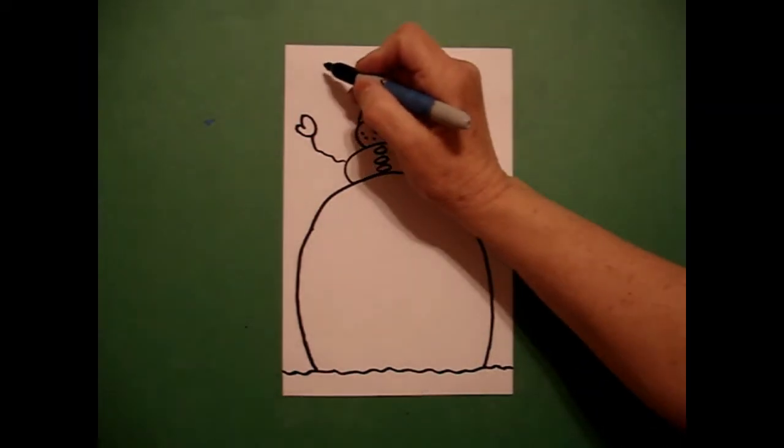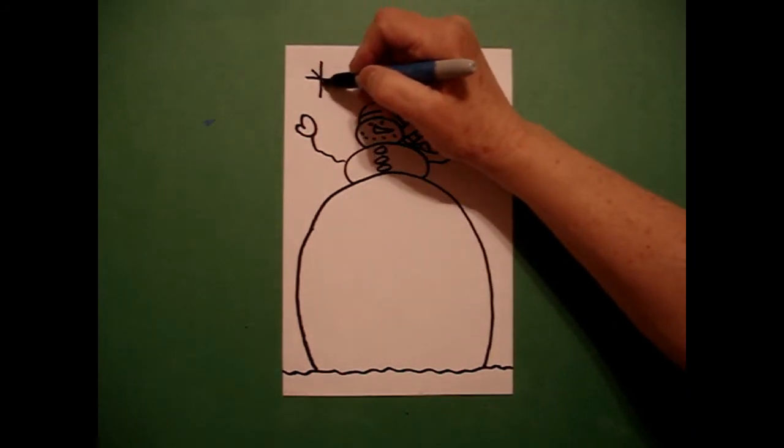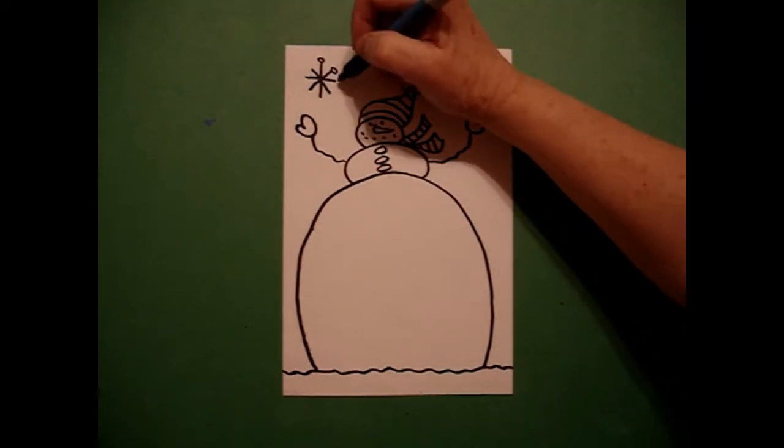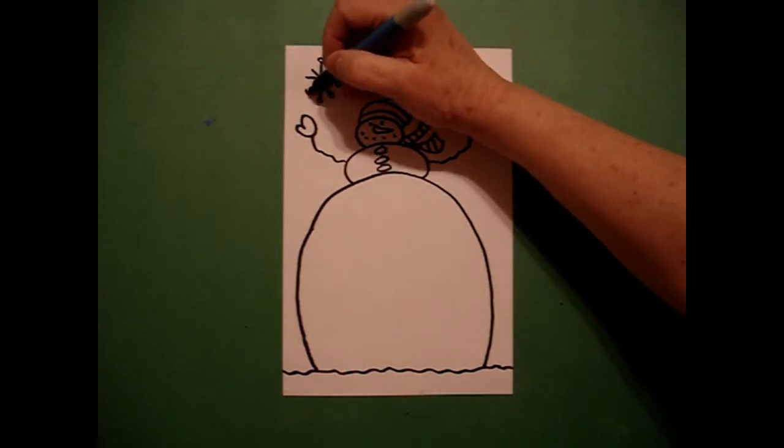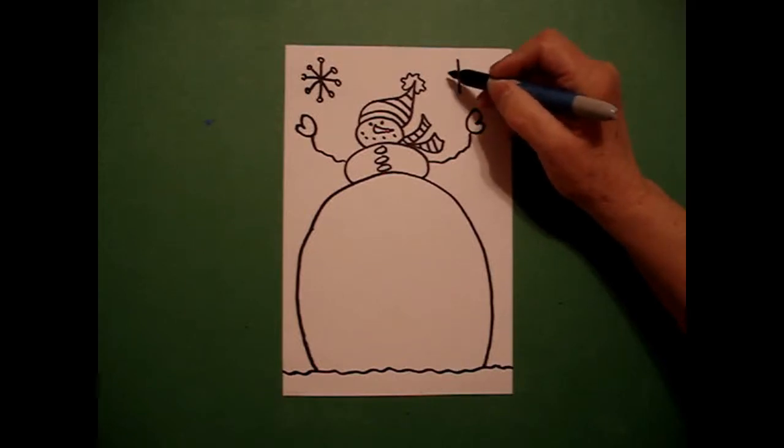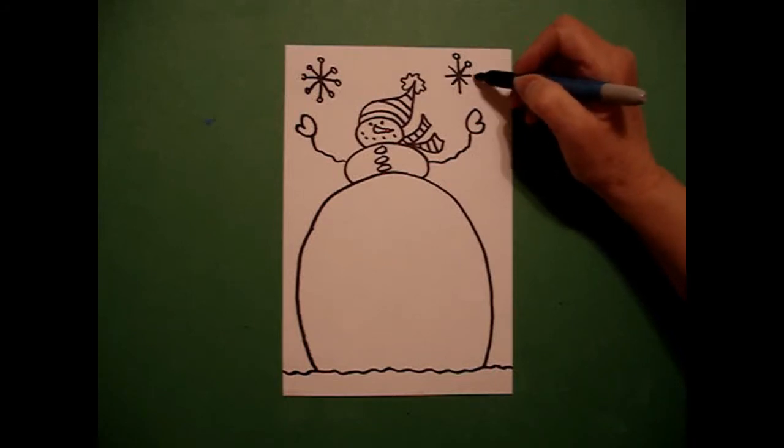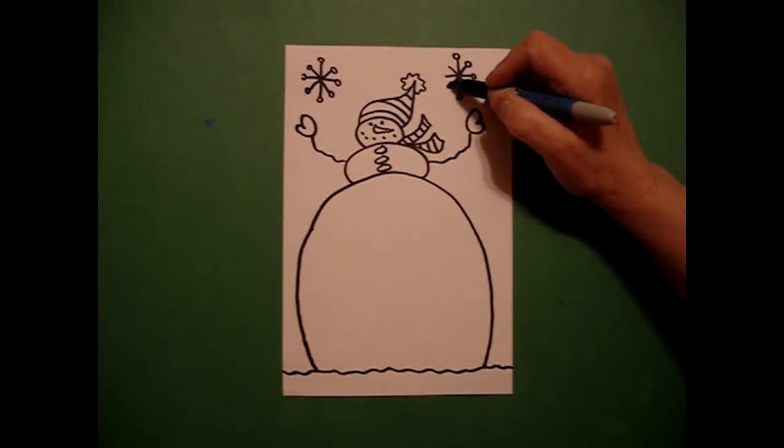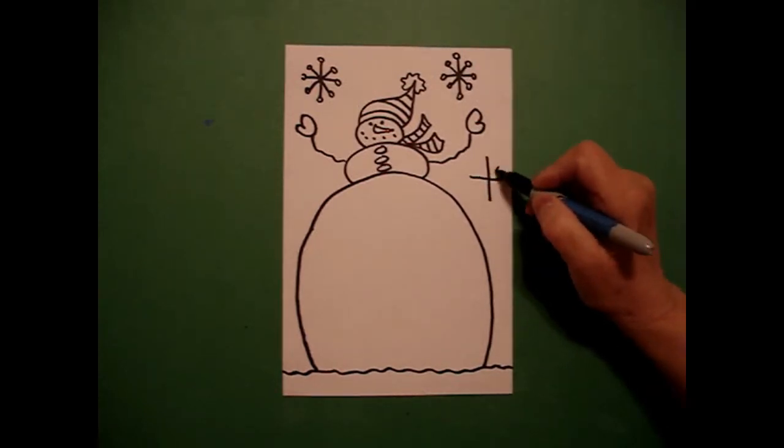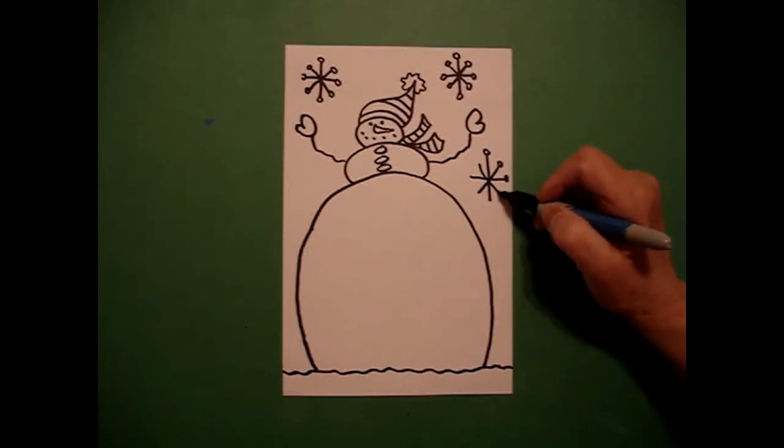Now I want to add some snowflakes so I go one straight line, two straight lines, three diagonal, four diagonal and I put a little baby circle at the end of each of my straight lines. And I can put another snowflake, one, two, three, four and put a little baby circle at the end of each one of my straight lines. And I can fit one more right here. One, two, three, four little baby circles.